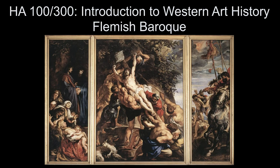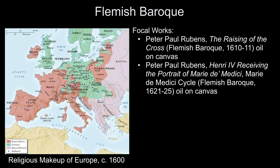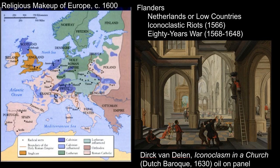In this lecture segment, we are talking about Flemish art during the 17th century. We'll focus on two works of art by Peter Paul Rubens.